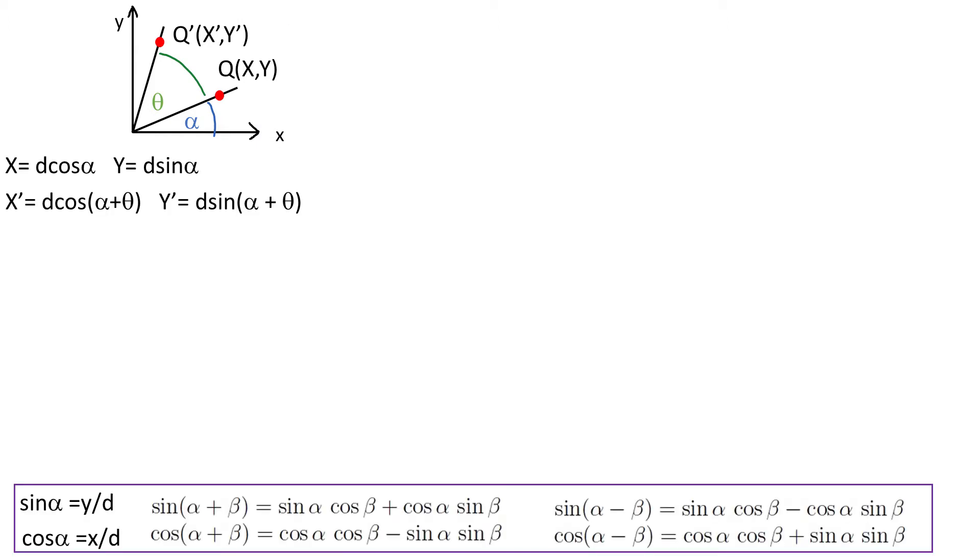Notice that we have sum of angles. Now we have to use the formula for the sum of sines and cosines so the new coordinates look like this. And the next step is to substitute d sin alpha and d cos alpha and we are almost done.